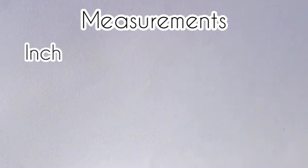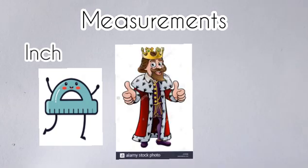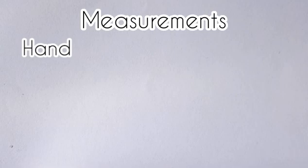At first, an inch was the width of a man's thumb. In the 14th century, King Edward II of England ruled that one inch equaled three grains of barley placed end to end lengthwise.